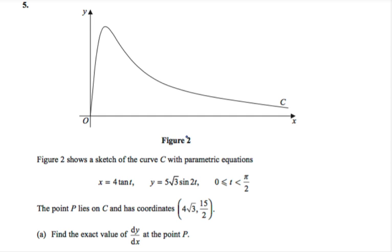Question 4. Figure 2 shows a sketch of the curve C with parametric equations: x equals 4 tan t, y equals 5 root 3 sin 2t, where t is between 0 and pi over 2. Point P lies on C and has coordinates 4 root 3, 15 over 2. Part A of the question says: find the exact value of dy/dx at the point P.